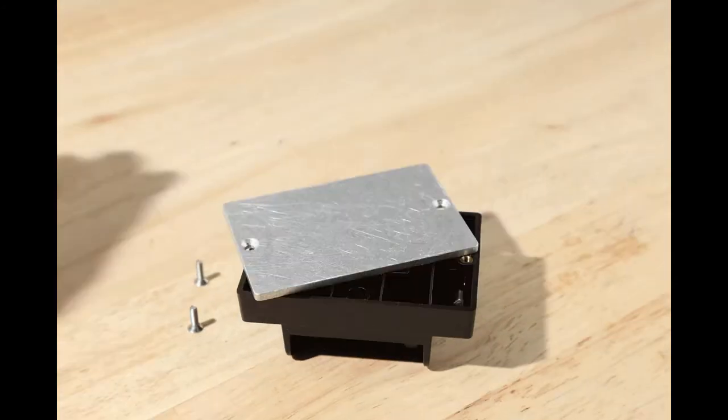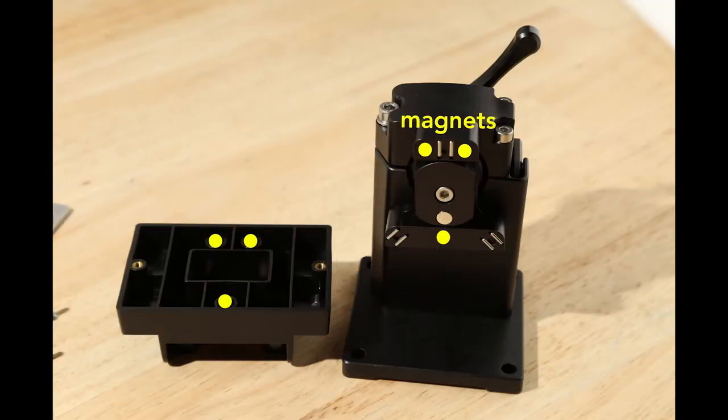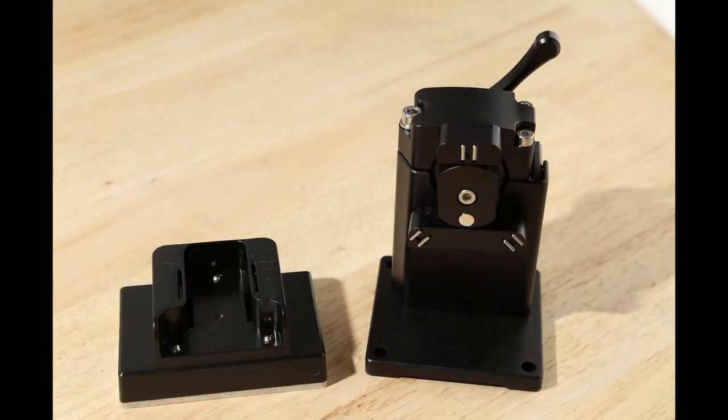Magnets inside the housing of the build head correspond to magnets in the T-shaped part on the build arm. On the top of the build head housing there are three spheres that protrude from the surface. They interface with these three sets of metal pins embedded in the build arm.